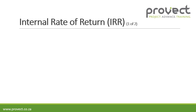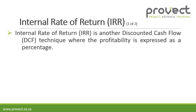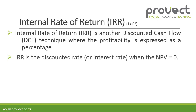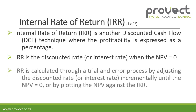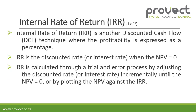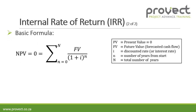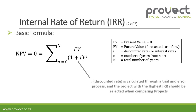The internal rate of return is another discounted cash flow technique where profitability is expressed as a percentage. The internal rate of return is the discount rate — or interest rate — at which the net present value equals zero. It is calculated through a trial and error process by adjusting the discount rate incrementally until the net present value reaches zero, or by plotting the net present value. The basic formula is: net present value (= 0) equals the sum of all present values based on the cash flow. The project with the highest internal rate of return should be selected when comparing projects.